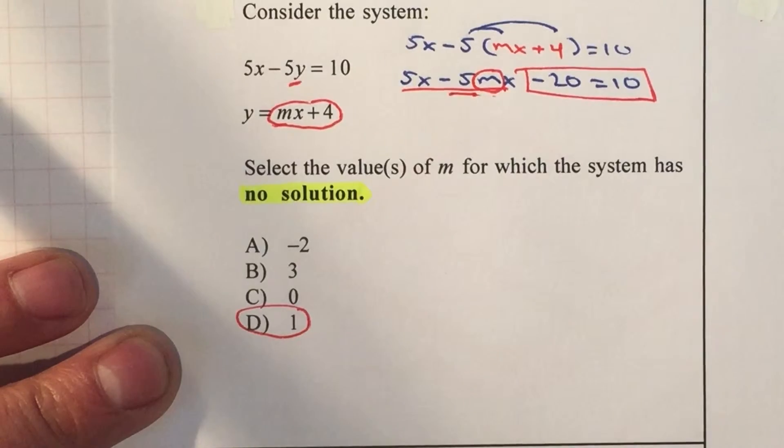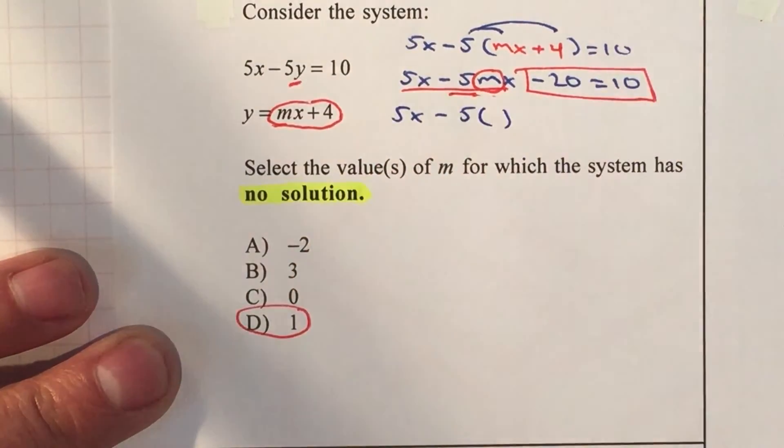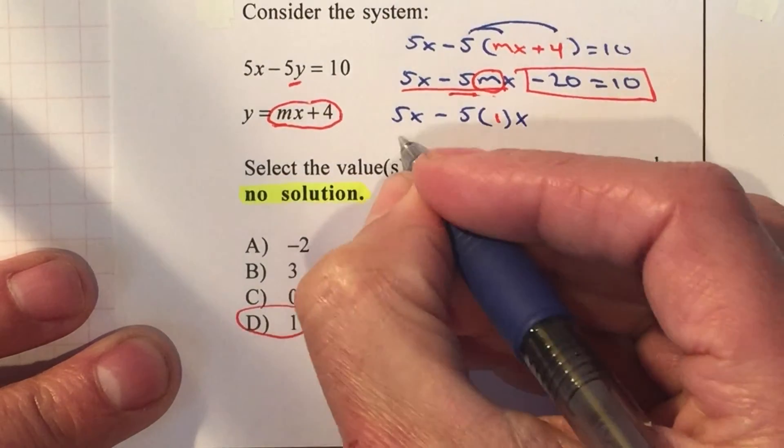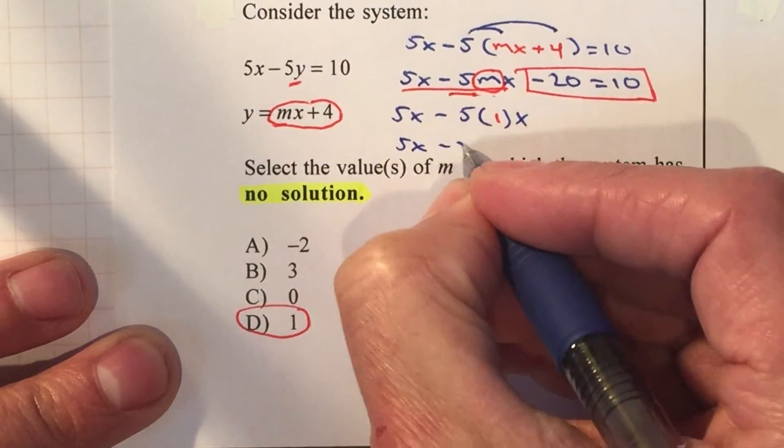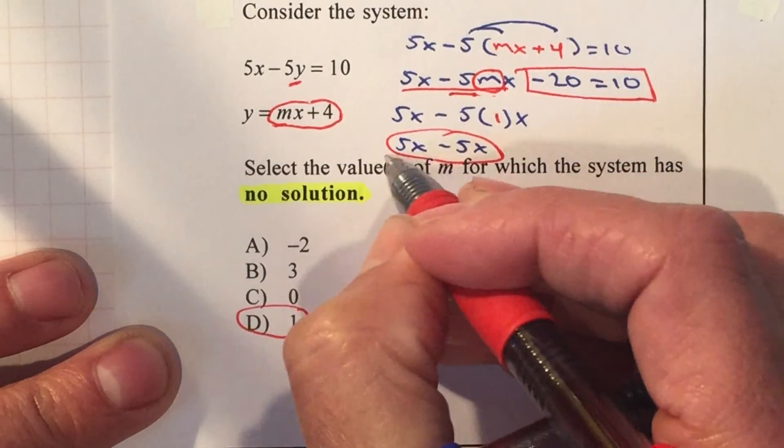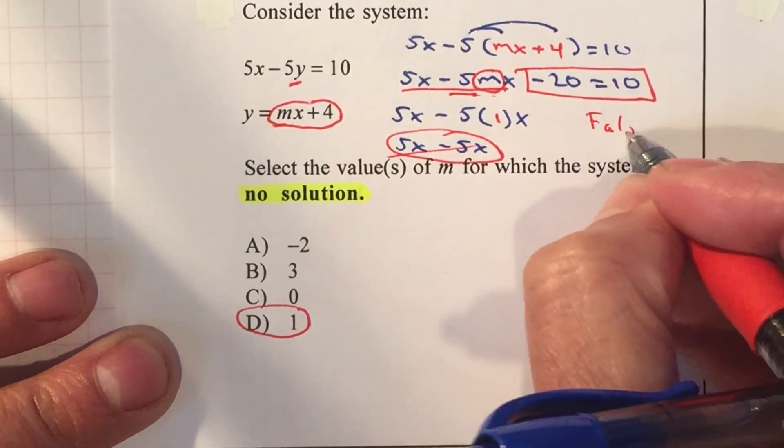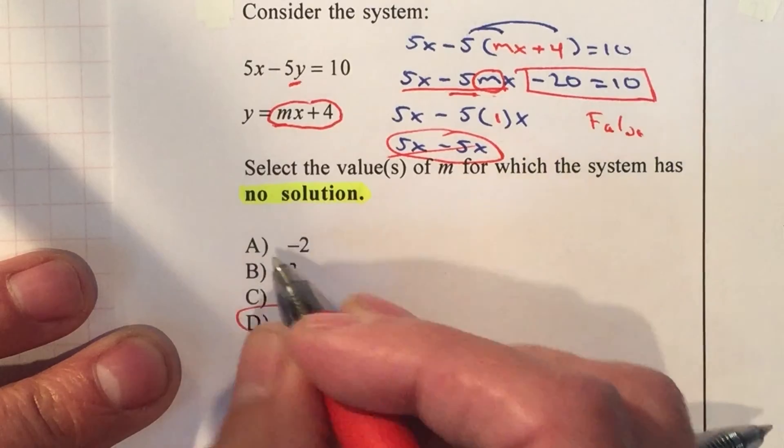Since if you plug in a 1 for the m, it gives you a 1, so it will be 5x minus 5x. Those two will cancel out, and that will be a false statement which means that there's no solution.